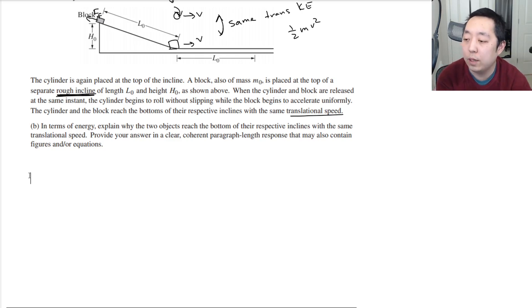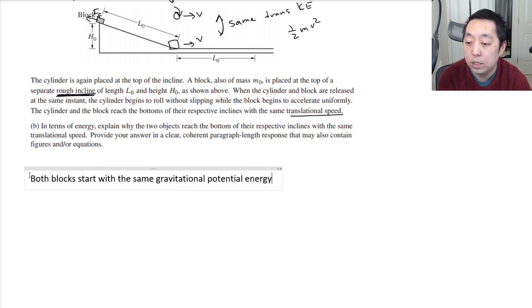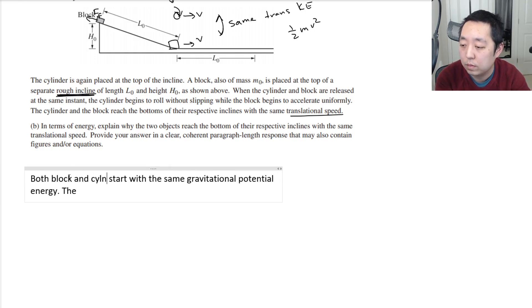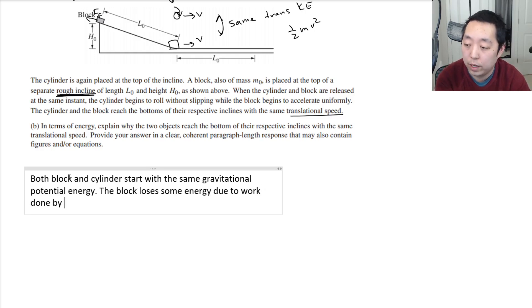I would say both blocks start with the same potential energy. Gravitational potential energy. The, or both, what is it? It's both the block and the cylinder. The block loses some energy due to work done by friction. Whereas, the cylinder does not lose any energy.